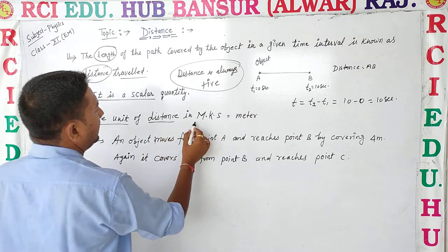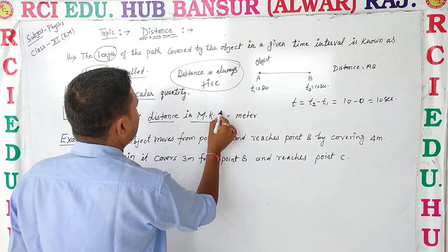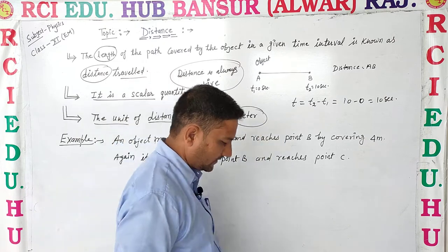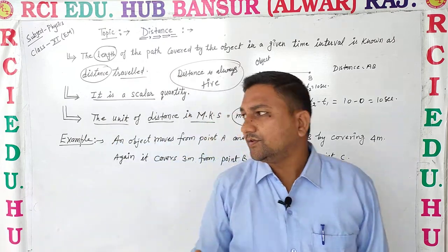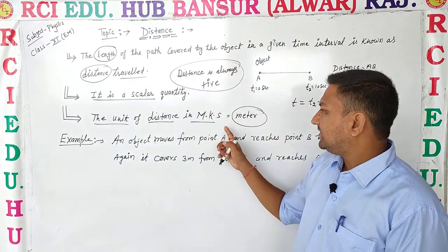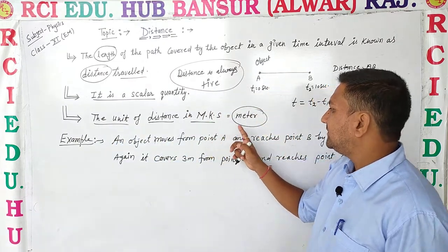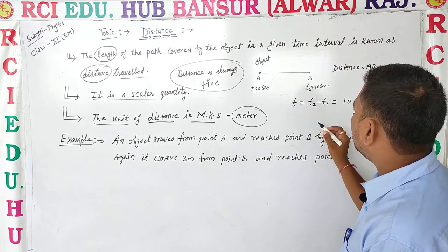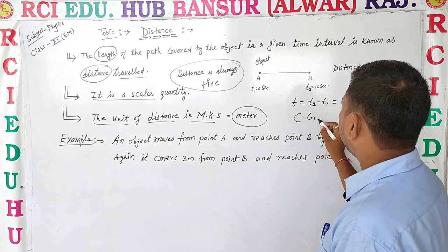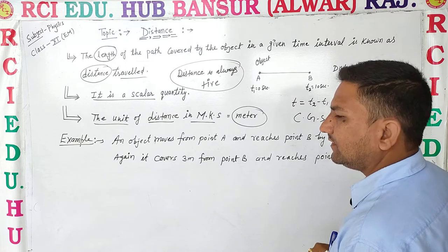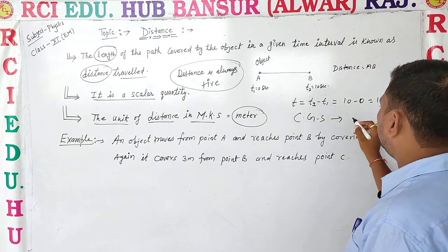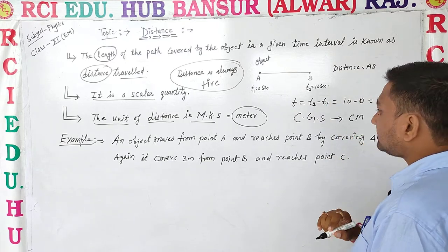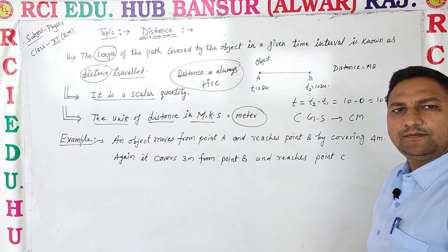The unit of distance in the MKS system is meter. In the CGS system, the unit of distance is centimeter.